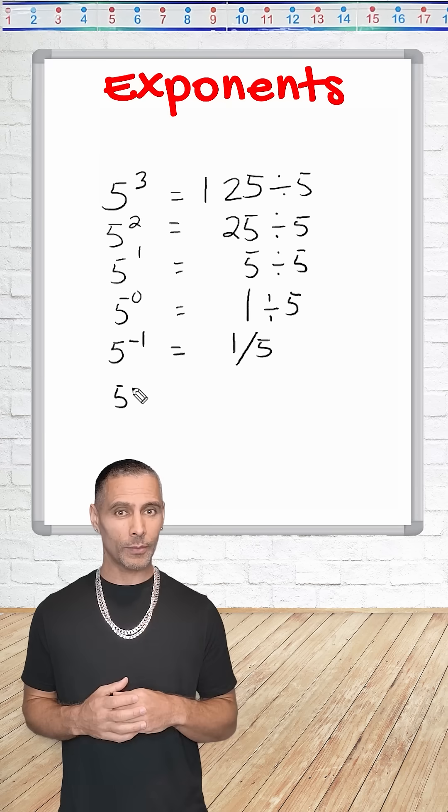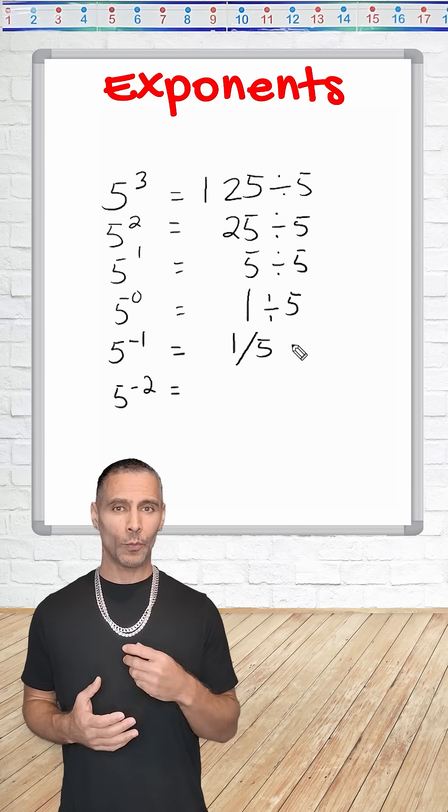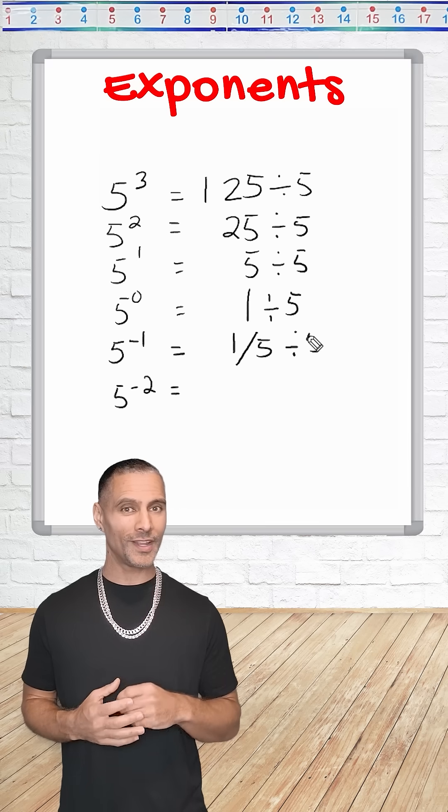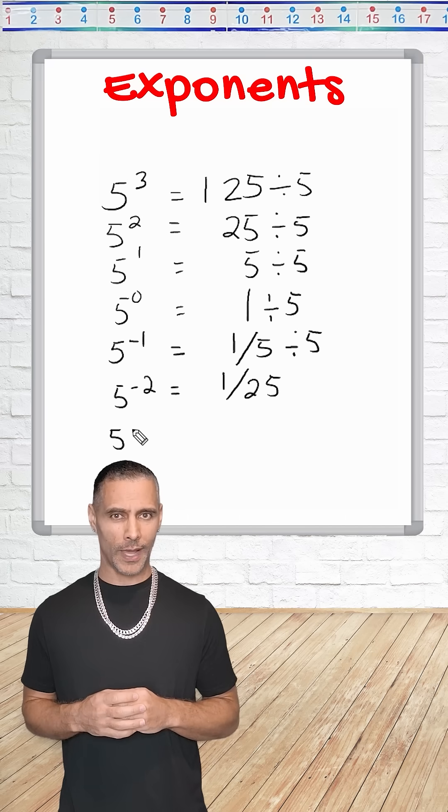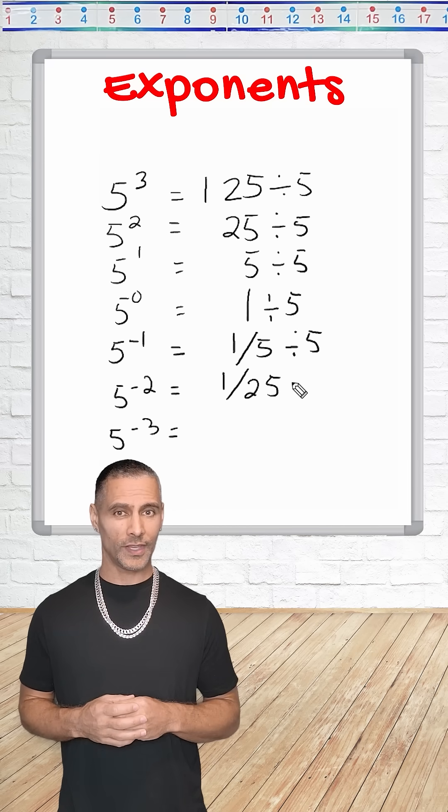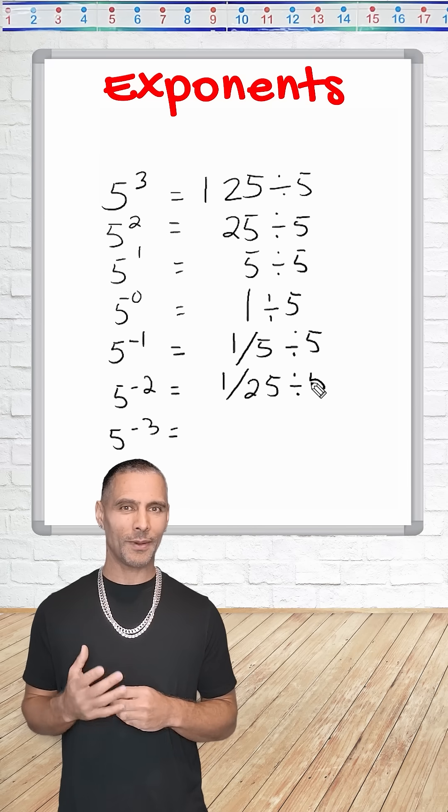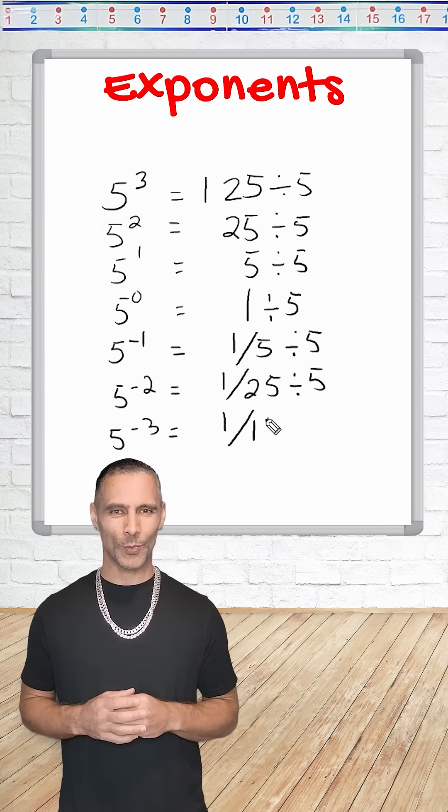Next, 5 to the negative second power means we divide by 5 again. And 1 fifth divided by 5 is 1 25th. Following the same pattern, 5 to the negative third power means dividing by 5 once again. And 1 25th divided by 5 is 1 125th.